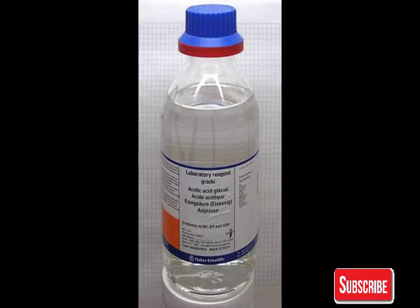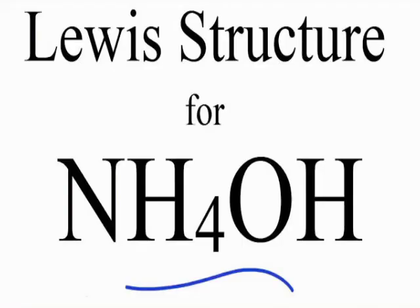Electrolytes are substances or materials which undergo chemical change or decomposition when electric current is passed through them. The best examples of electrolytic conductors are water, hydrochloric acid, ammonium hydroxide, and acetic acid.